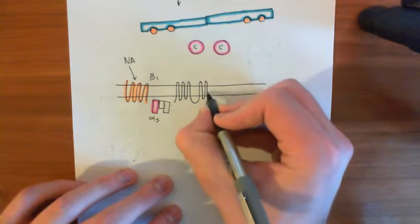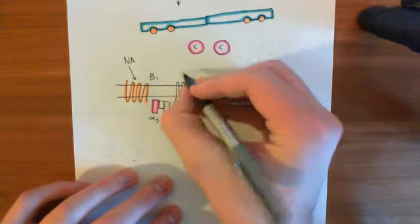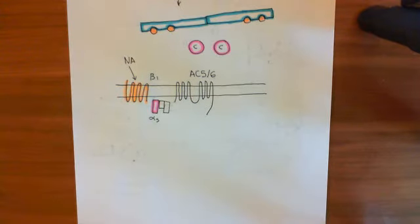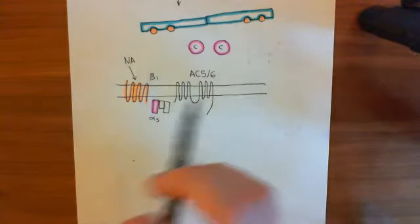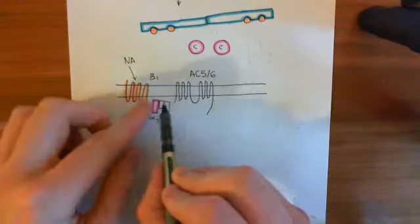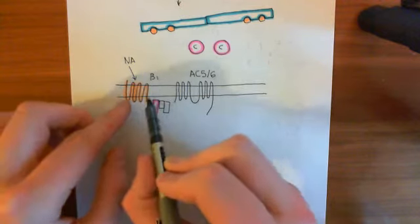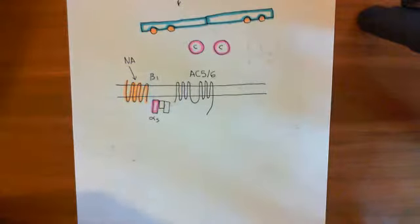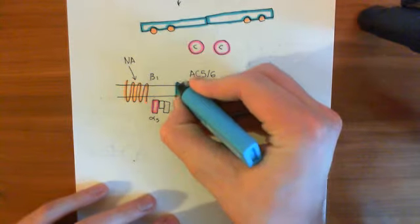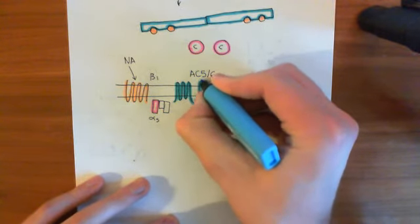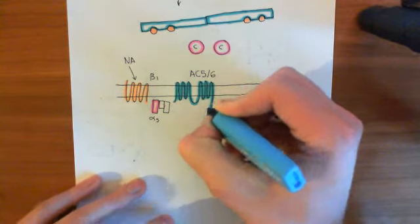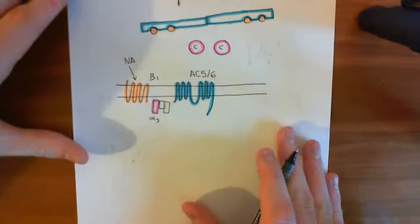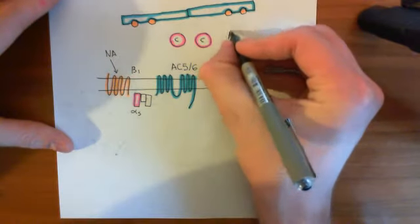The key thing I'm trying to get across here is that these components are not just floating around in the membrane unorganised. They are instead all bound together in a massive complex, so that when one is activated, it activates the next. The protein kinase A is also going to be part of this complex. Now, we need to introduce a new player: a protein which connects the adenylyl cyclase 5/6 enzyme to the type 2 protein kinase A. This is known as an AKAP protein — A kinase anchoring protein.